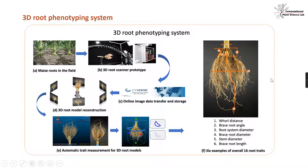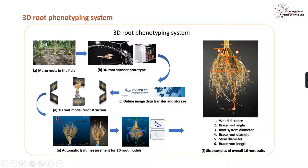You can see here — we have the maize root in the field, we feed it into the 3D scanner prototype, we build 3D root models, and we can measure the 3D root models by tracking individual root traits. We can get 16 root traits from the root system, and on the right side I'm showing 6 representative examples of all 16 root traits. It is very important — and impossible — to measure the wall distance and the number of brace roots and crown roots using only a 2D image system.